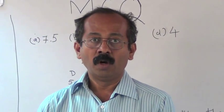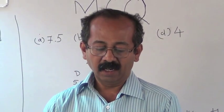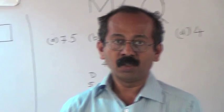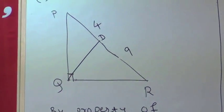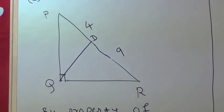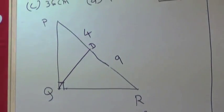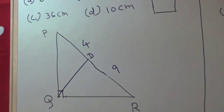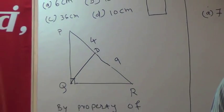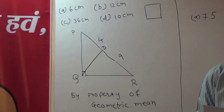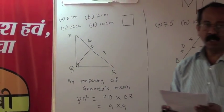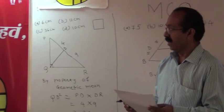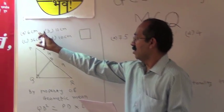Example 2: In triangle PQR, angle Q is equal to 90°. Segment QD is perpendicular to hypotenuse PR. If PD is equal to 4 cm and RD is equal to 9 cm, what is the length of segment QD?